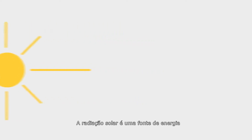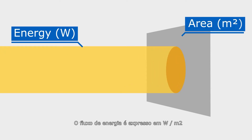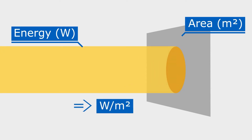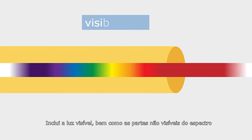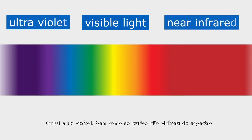Solar radiation is a source of energy. The energy flux is expressed in watts per square meter. It includes visible light as well as non-visible parts of the spectrum.